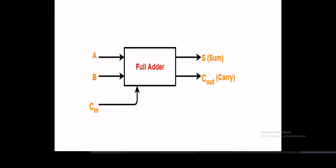As shown in the diagram, the inputs are A, B, and C. C is nothing but the carry which comes from the previous circuit. This full adder adds three bits and gives the output in terms of sum and carry. This carry we call carry out, and whatever comes into the full adder from the other circuit is called carry in.